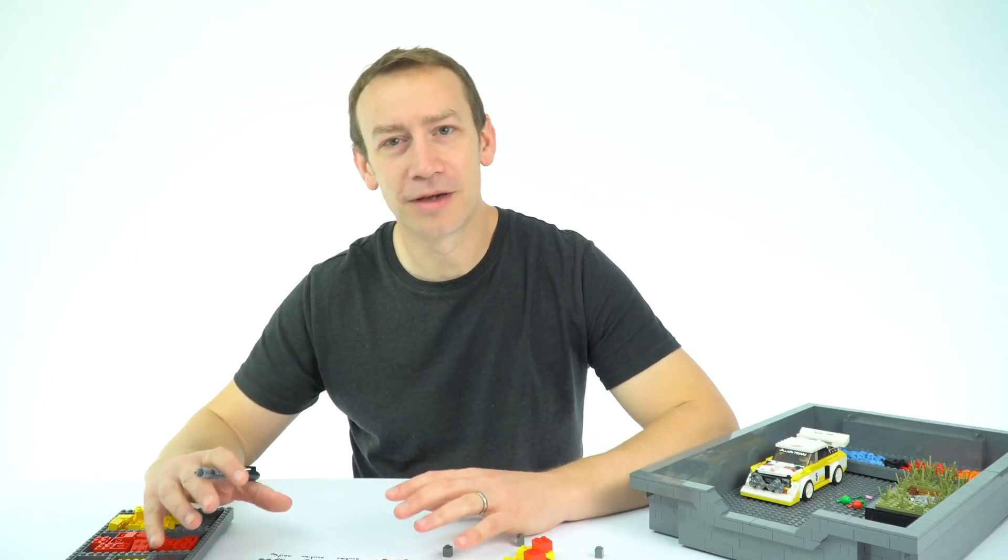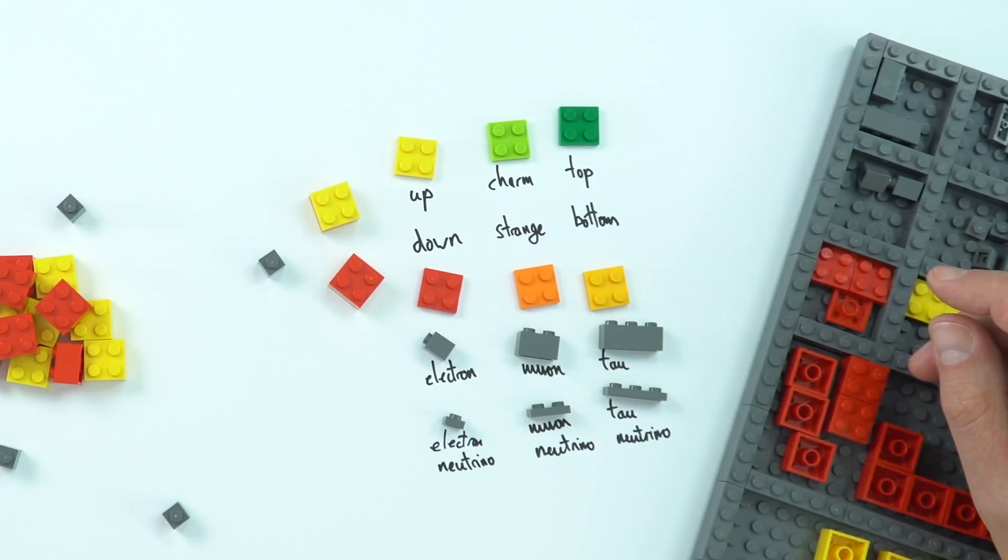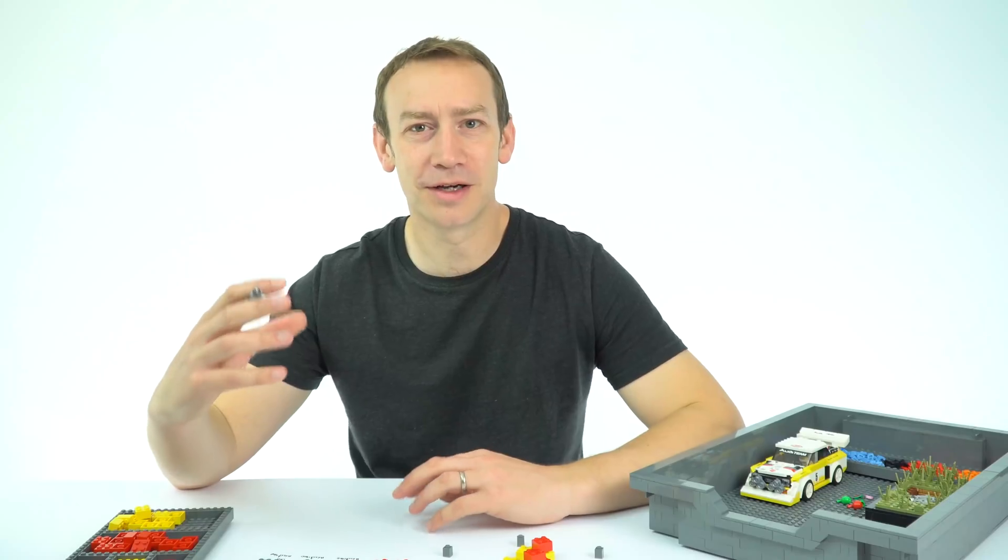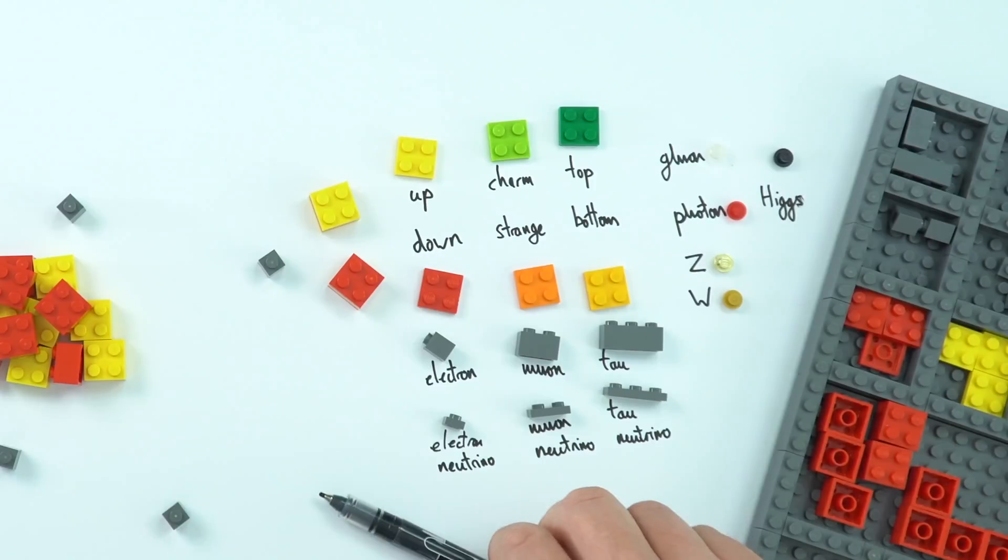So these are the fundamental particles from which everything else is made and this is called the standard model. So most things are made out of up and down quarks and electrons and the other things maybe only come into existence for a very short amount of time, often in high energy particle collisions. Oh by the way, in the standard model we also have these exchange particles called bosons which are to do with forces but let's not go there at the moment.